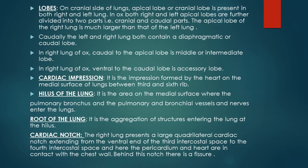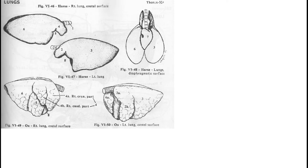On the cranial side of the lungs, an apical lobe or cranial lobe is present in both right and left lungs. In case of ox, both the right and left apical lobes are further divided into two parts: one cranial and one caudal. The apical lobe of the right lung is much larger than that of the left lung in case of ox.